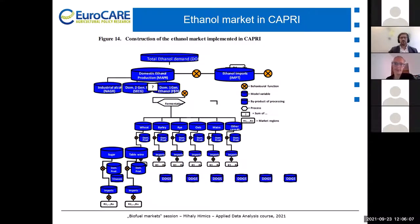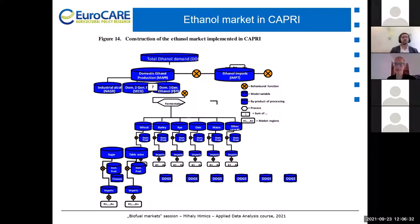We do not have a description of second generation ethanol production within CAPRI — it is considered completely external to the model, something exogenous. This is based on external projections from other models. Typically we take it from energy models that are much better than agricultural models at predicting how second generation biofuel production will look in the future. One of the main sources for CAPRI is the PRIMES energy model, and we also take second generation projections from the Aglink model, one of the main outlook models used by the European Commission.